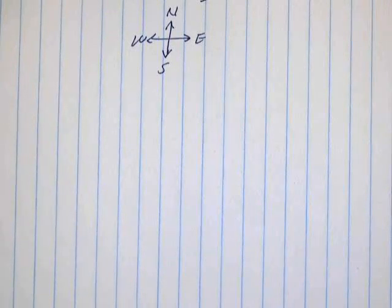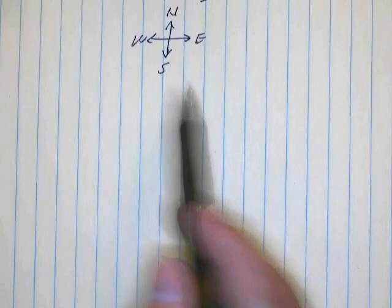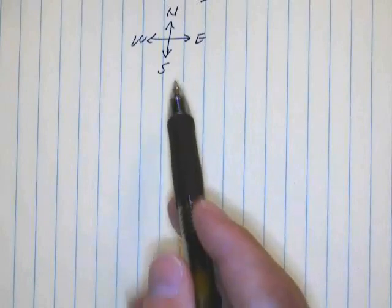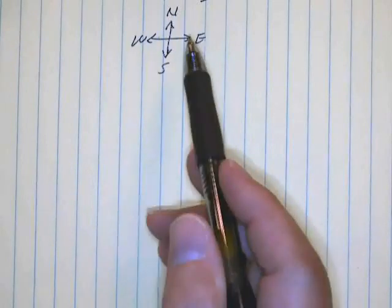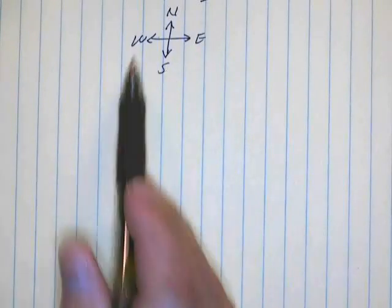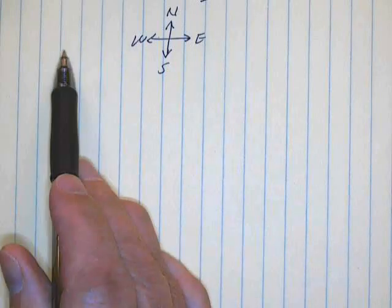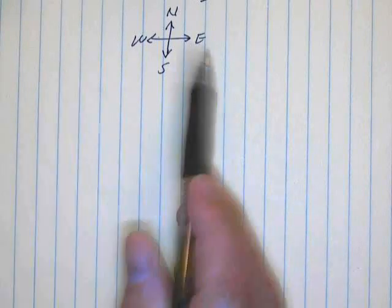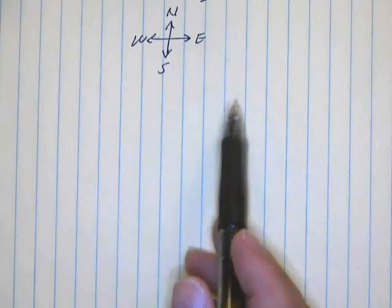What's the difference between distance and displacement? Well, it's like this. If we assume that on our paper, north is towards the top of the paper, south is towards the bottom of the paper, west is towards the left, and east is going to be towards the right,